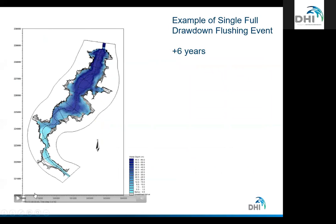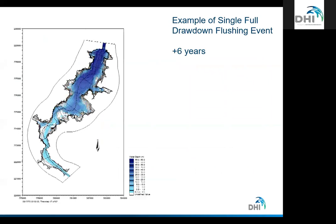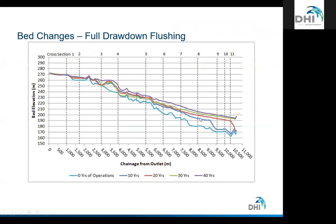We also looked at flushing scenarios where we draw down the water at the dam, resulting in a more river-like scenario that flushes sediment out, then levels build back up. The flushing results show erosion of that delta, and you're keeping more reservoir volume over time and matching your sediment budget. Looking at those relative differences between the base case and flushing scenarios gives more confidence in results.